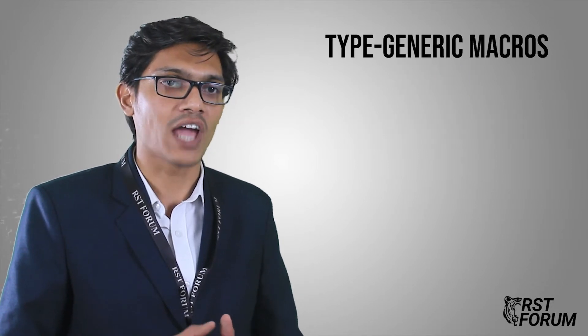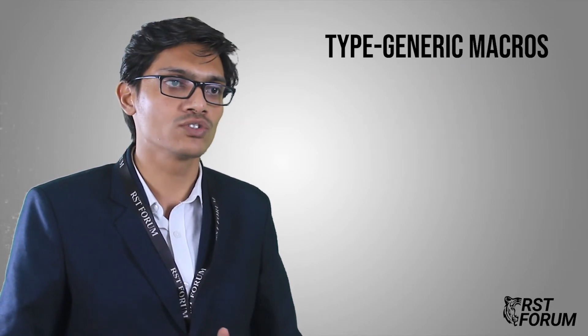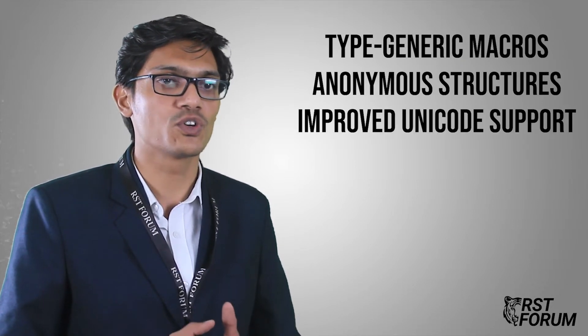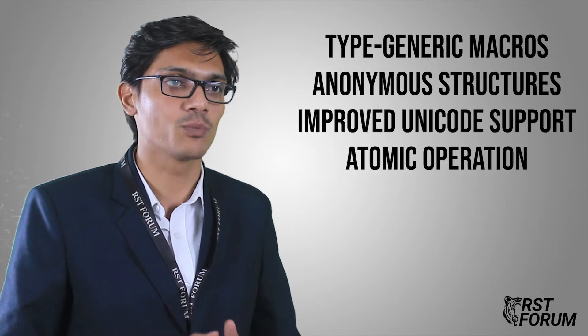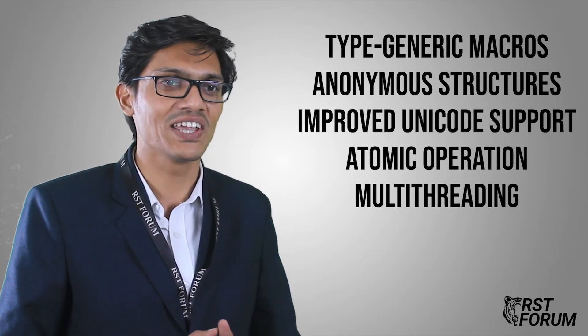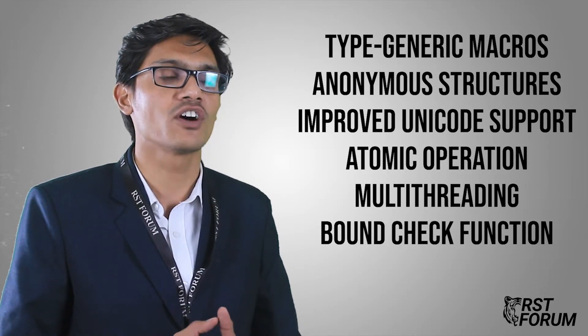In 2011, C11 was released, adding new features to C and its library, including generic macros, anonymous structures, improved Unicode support, atomic operations, multi-threading, and bounds-check functions.